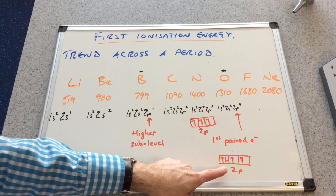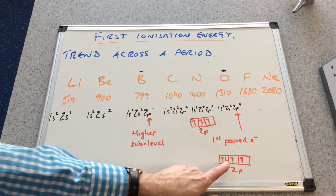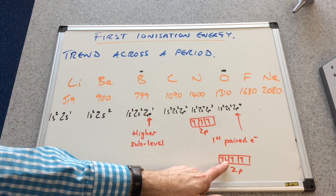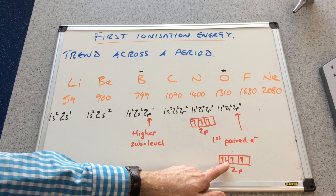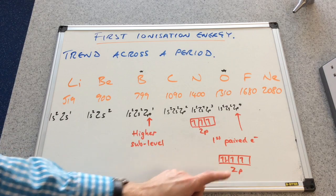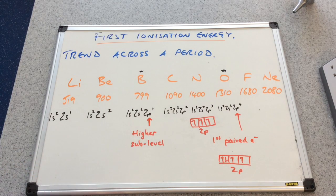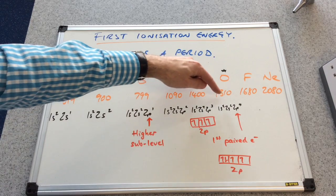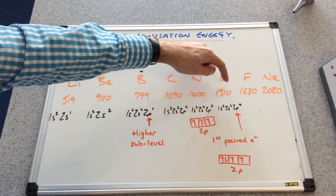So when you come to oxygen, which has a 2p4 configuration, we've got our first paired electron. And this paired electron will experience a little bit of repulsion from the other electron. And so because it's being repelled, it's slightly easier to remove. And so it dips down. So we'll go from 1,400 kJ per mole to 1,310.